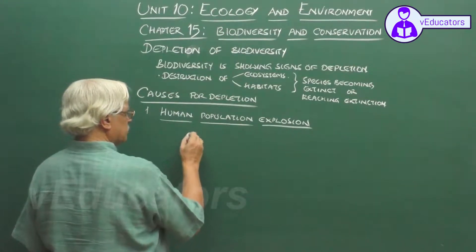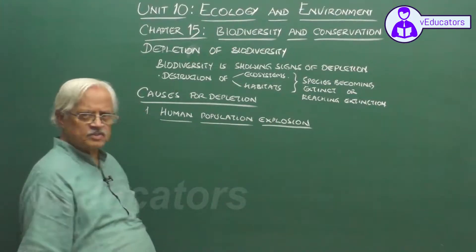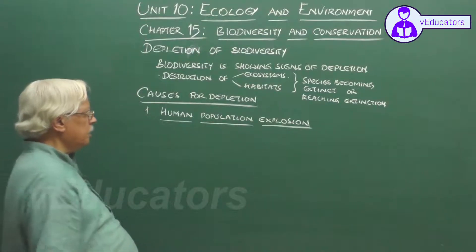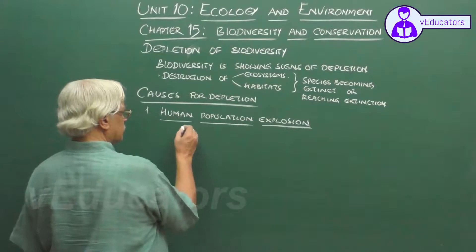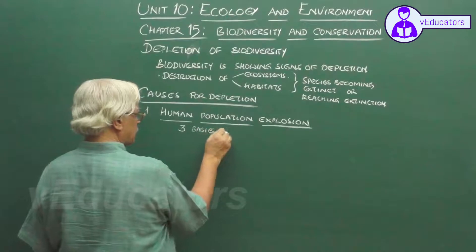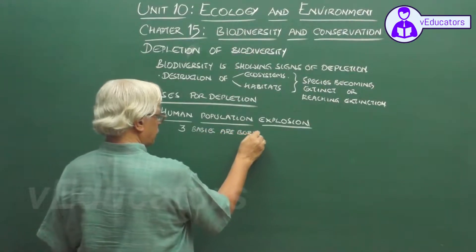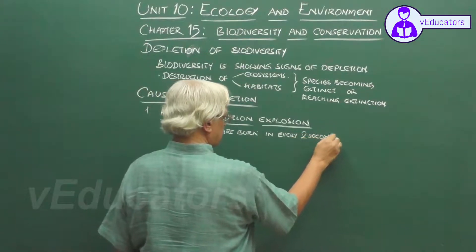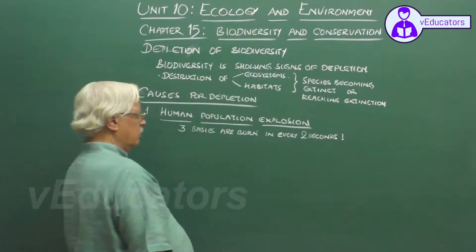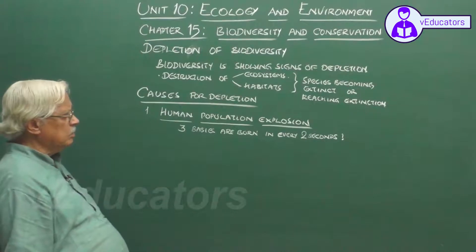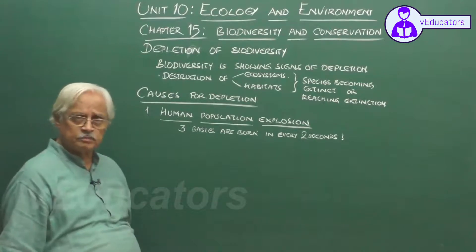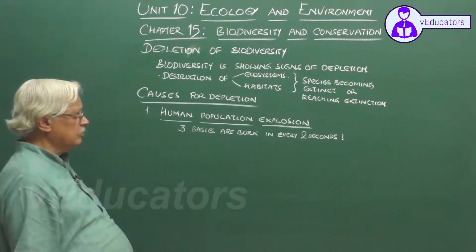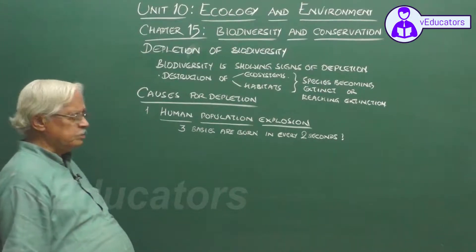We use the word 'explosion' for this increase to indicate the rate at which it is taking place. It is said that in countries like India, three babies are born every two seconds. That is the rate of population increase in countries like India and China. We are already nearing 130 crores, inching towards being the most populated country in the world.